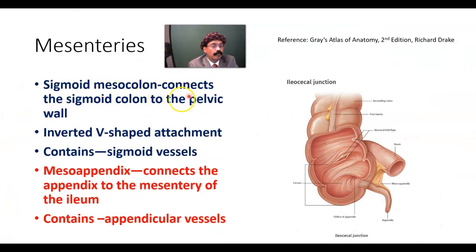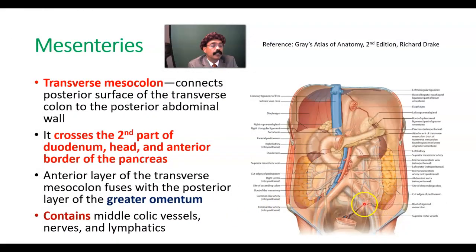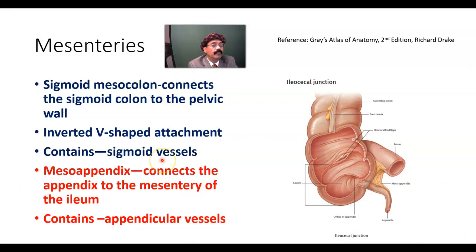The sigmoid mesocolon connects the sigmoid colon to the pelvic wall with an inverted V-shape attachment at the left ureter and bifurcation of the common iliac artery. One limb goes to sacral vertebra 2, and another limb passes along the psoas major muscle. It contains the sigmoid vessels; the sigmoid artery is a branch of the inferior mesenteric artery.